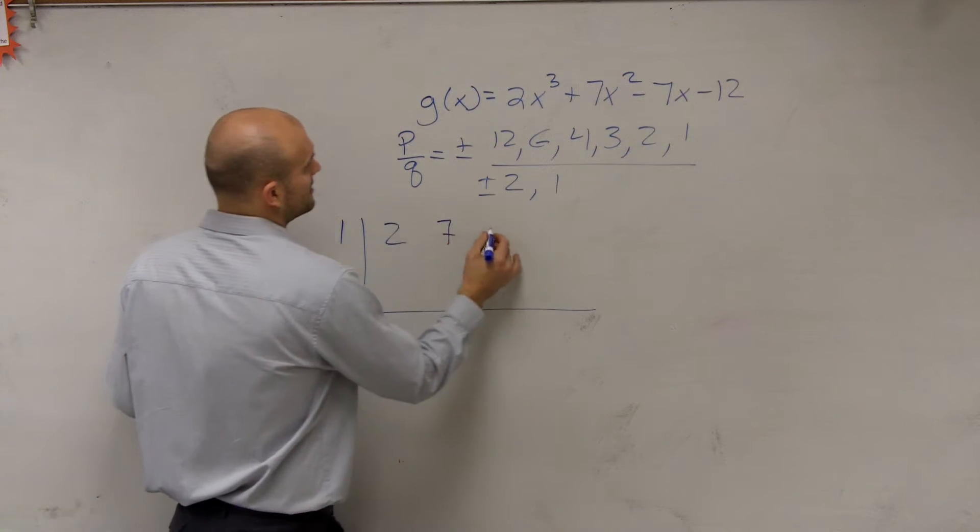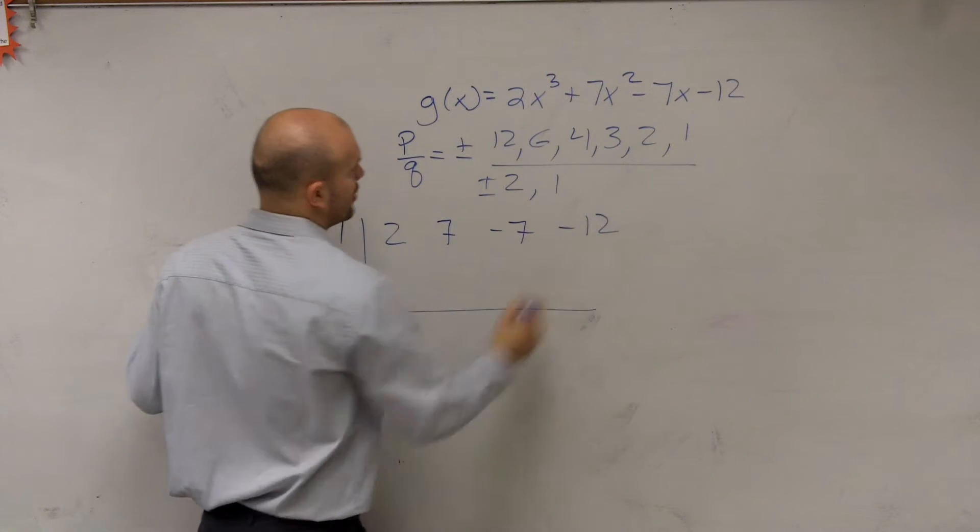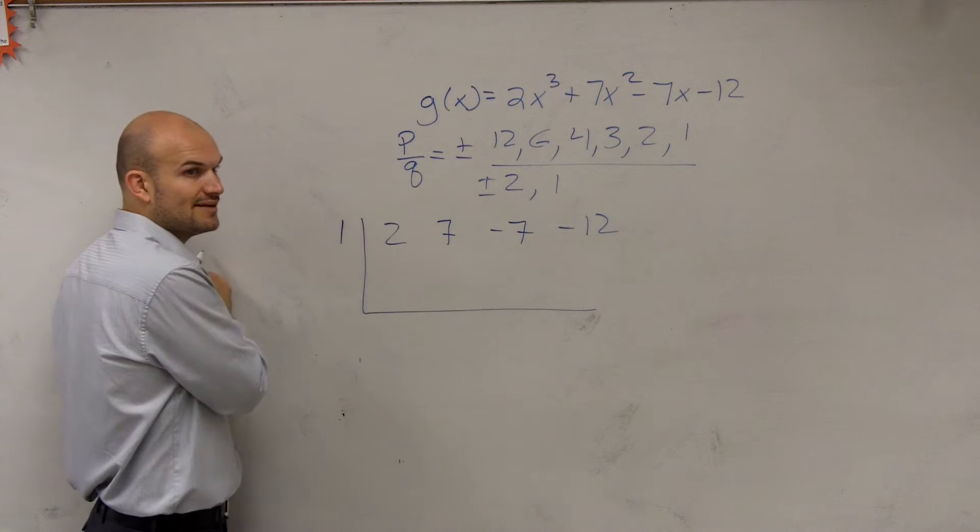So I have 2, 7, negative 7, and negative 12. So let's determine, let's see if 1 is a zero.